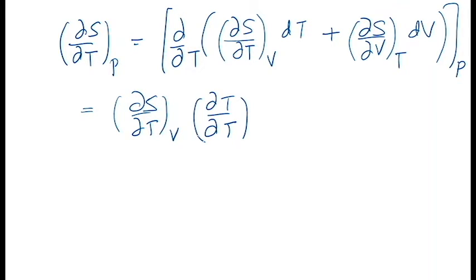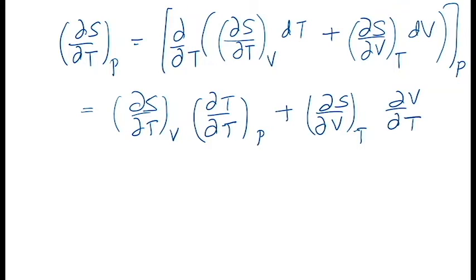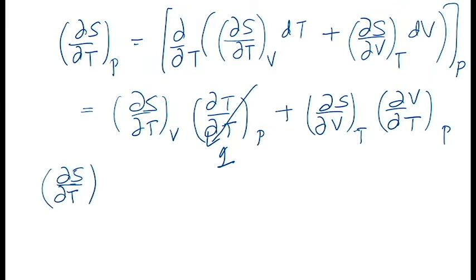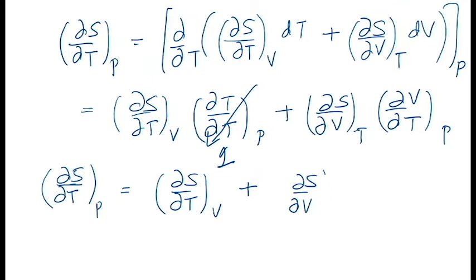Taking the differentiation of the entropy expression with respect to T at constant pressure, we get: (del S / del T) at constant pressure equals (del S / del T) at constant volume, plus (del S / del V) at constant temperature times (del V / del T) at constant pressure. This is equation number four.